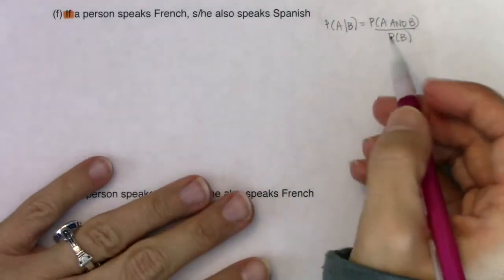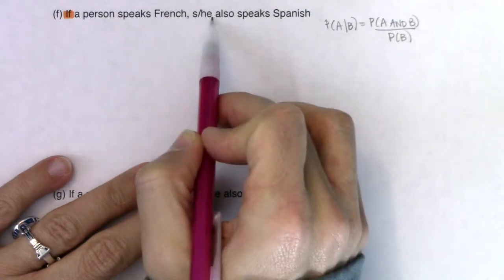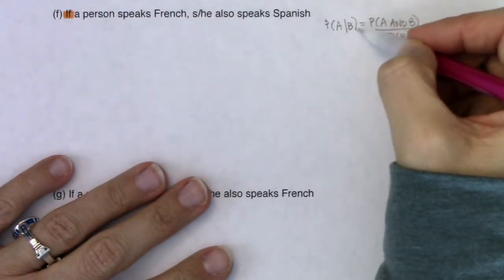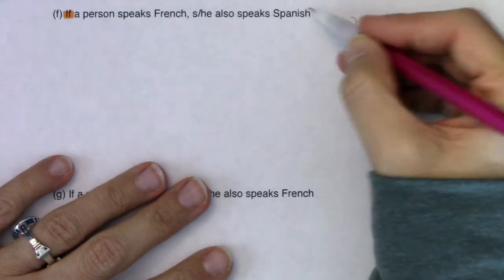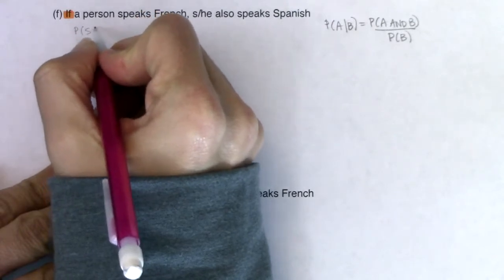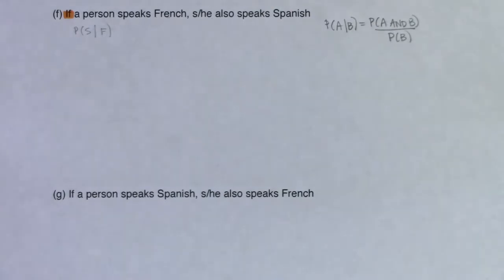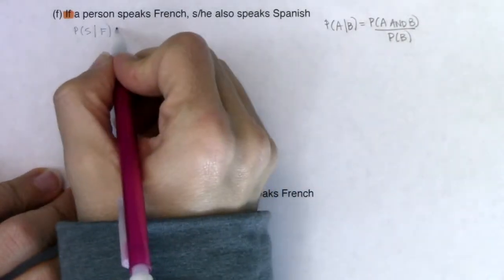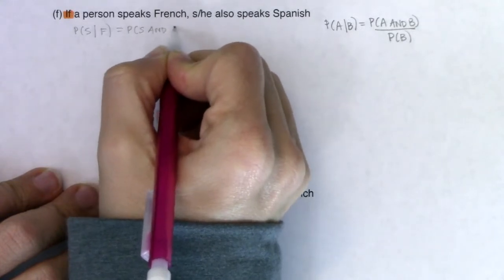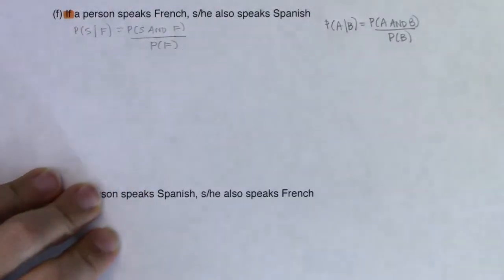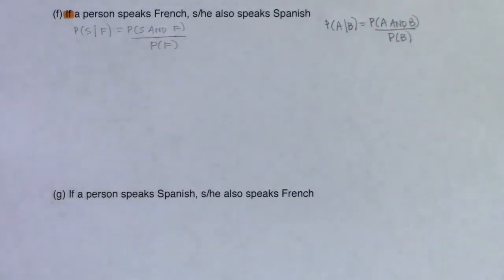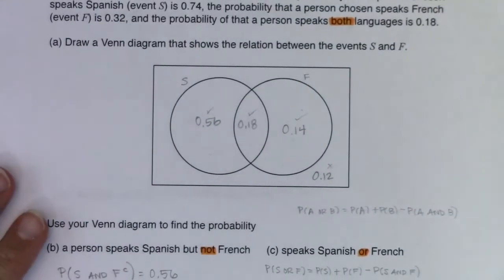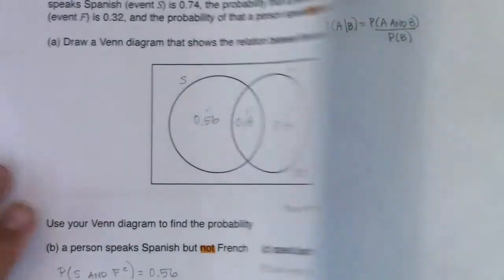Now we want to be careful. We have: if a person speaks French, he or she also speaks Spanish. The condition is we are given the person speaks French. So instead of the letter B, I'm going to use F, and instead of A, I'm going to use S for Spanish. So I want the probability of S given F, which gives me the probability of S and F over the probability of F. Now, S and F in a Venn diagram — that's the football. Inside my football it looks like there's 18%, so that's going to be my numerator.